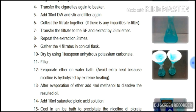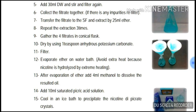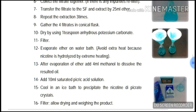Collect the filtrates together; if there are any impurities, re-filter. Transfer the filtrate to the separating funnel and extract with 25 ml ether. Repeat the extraction three times. Gather the four ether layers in a conical flask and dry by using one teaspoon of anhydrous potassium carbonate, then filter.